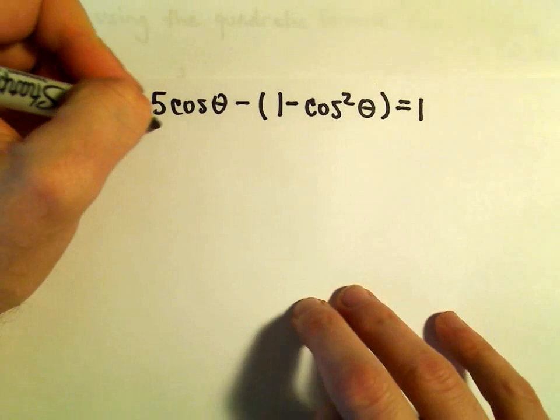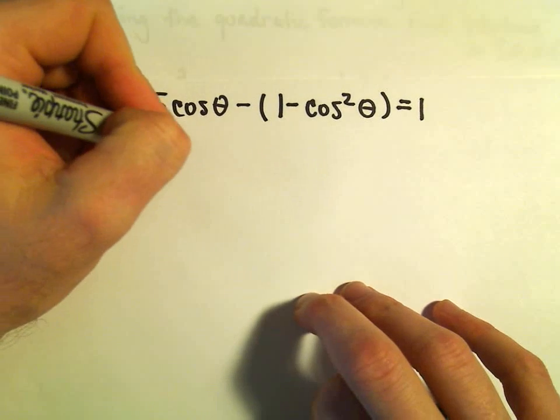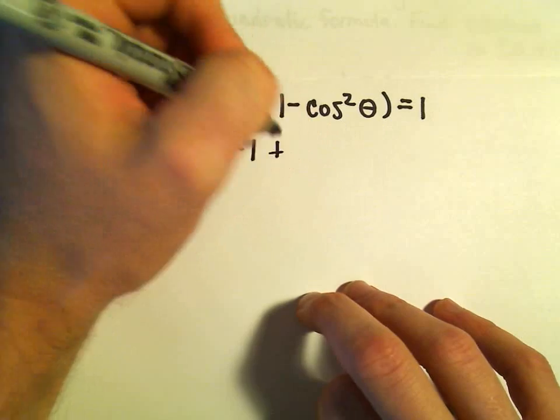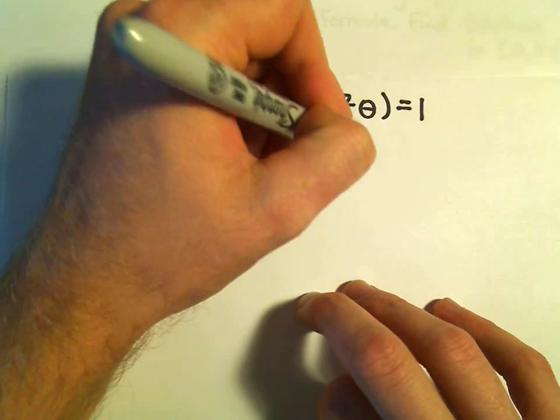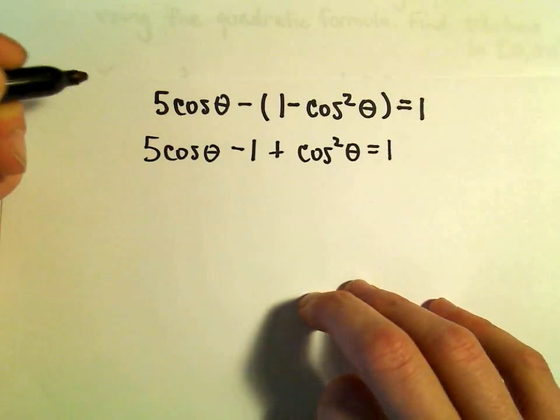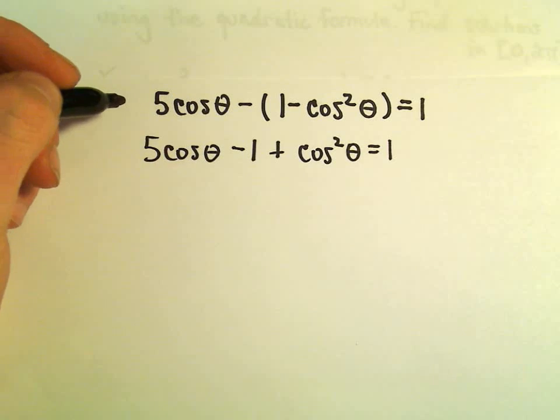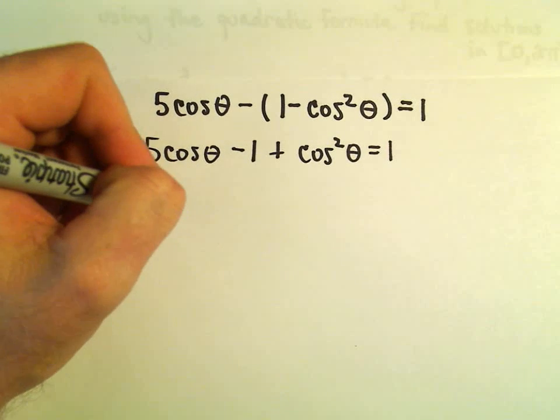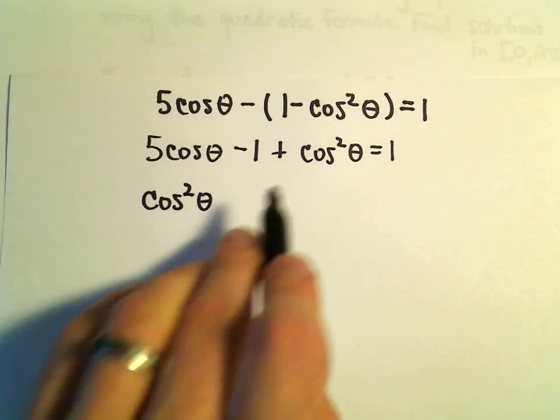If we distribute the negative, we'll get 5 cosine theta minus 1 plus cosine squared theta equals 1. This looks like a quadratic equation, so I'm going to reorder it. I'm going to put this cosine squared theta first.